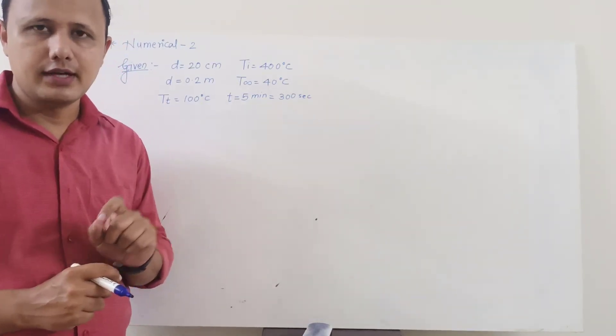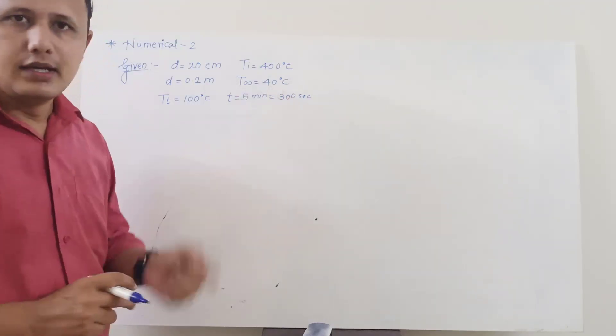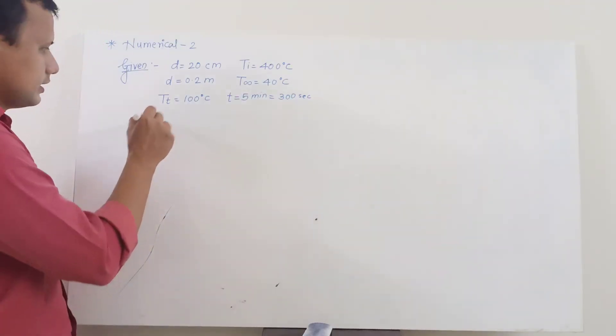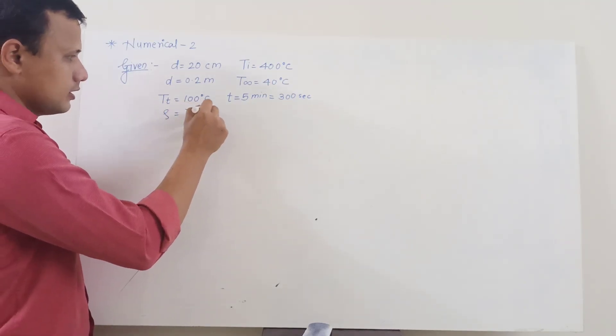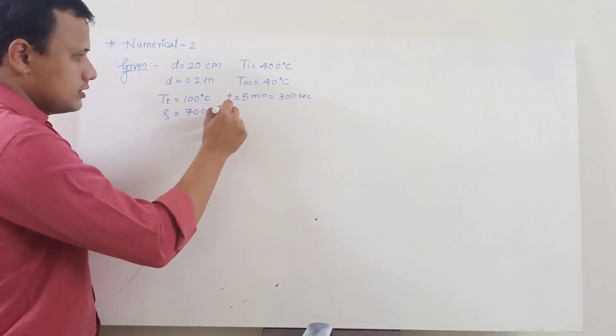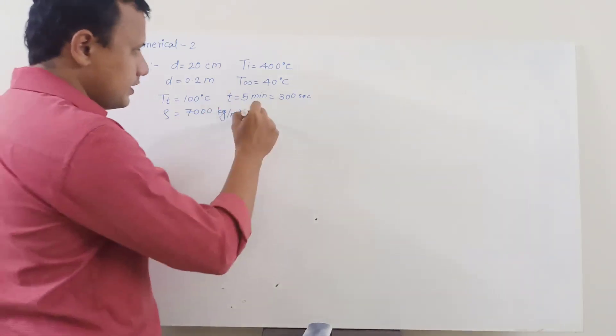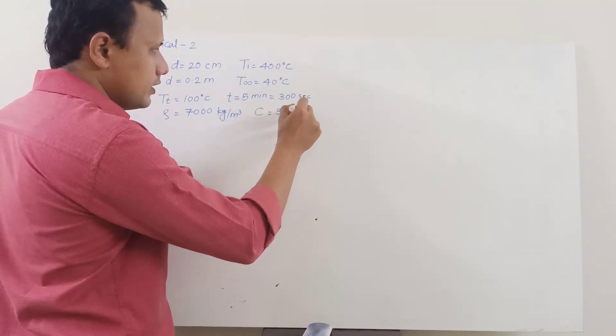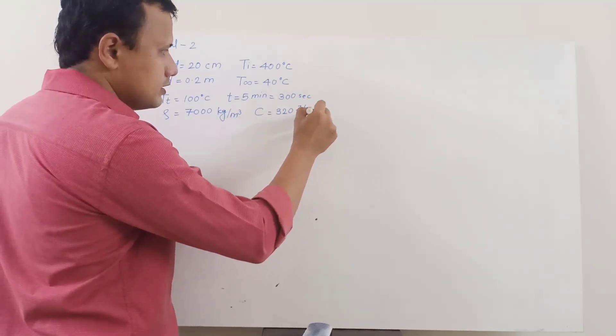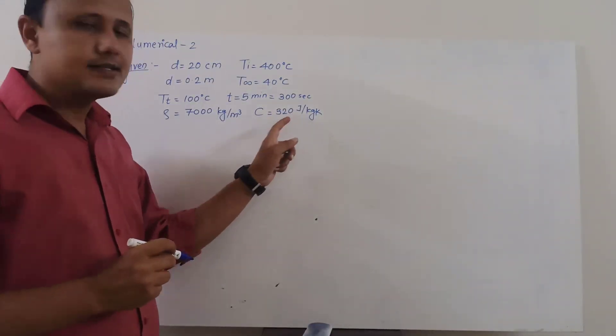And that time T is nothing but 5 minutes which is 300 seconds. It is necessary to convert the time into seconds because unit of heat transfer coefficient will be Watt per meter square Kelvin and the Watt itself is nothing but Joule per second. Also the density of that cast iron ball is given as 7000 kg per meter cube.